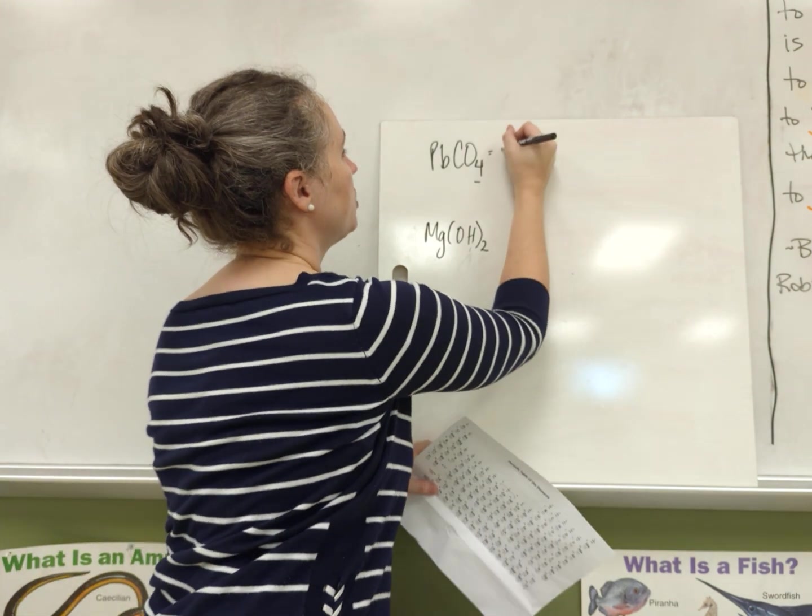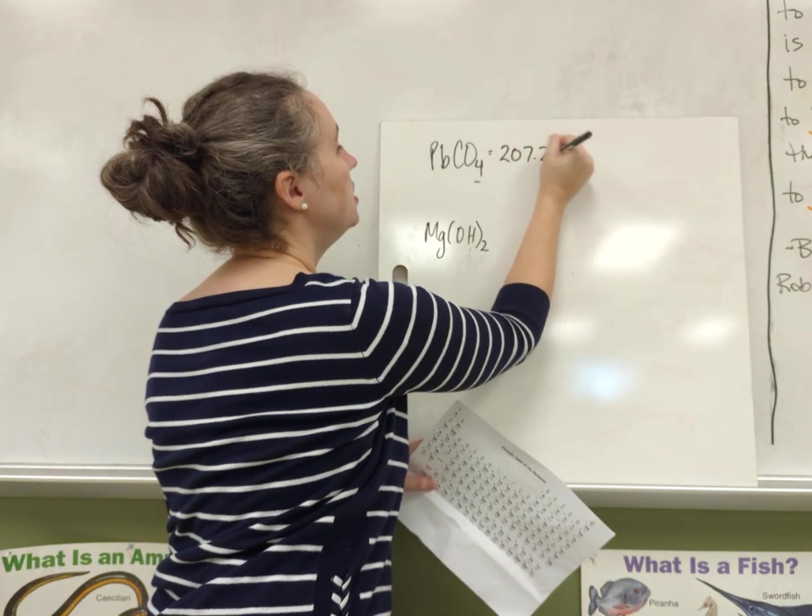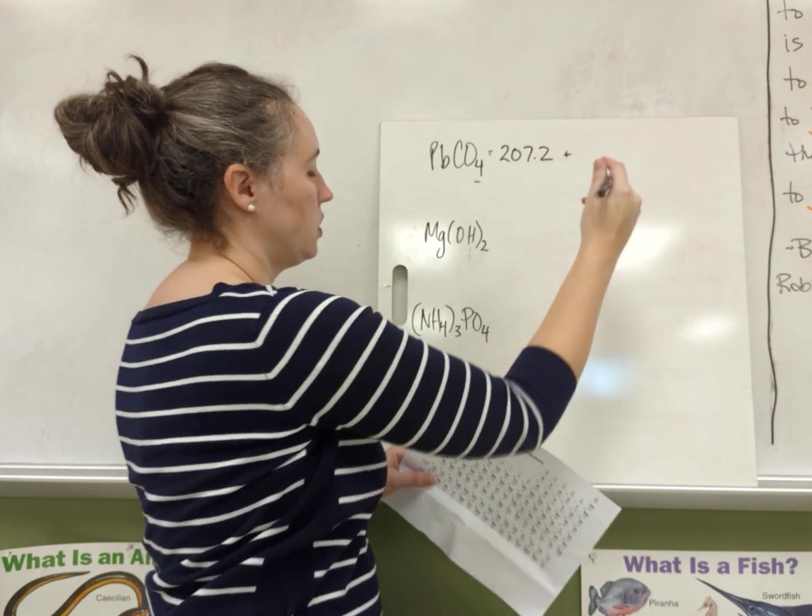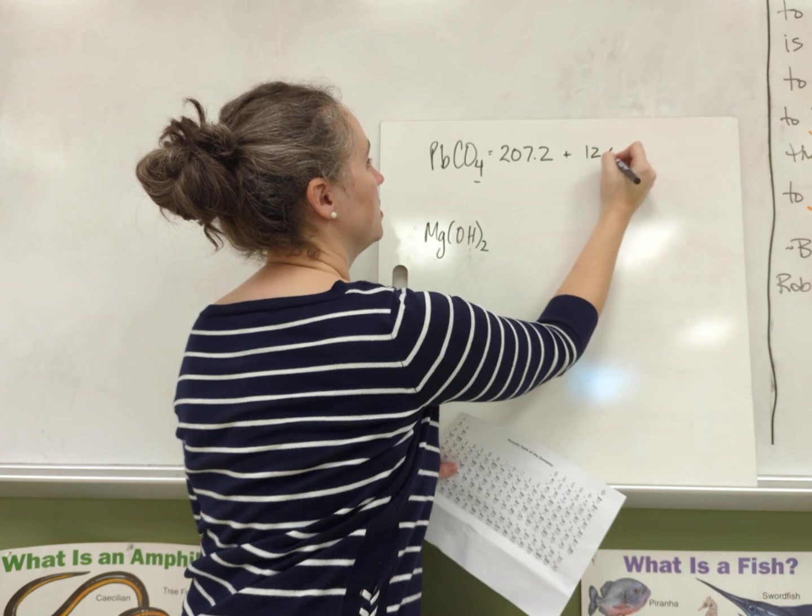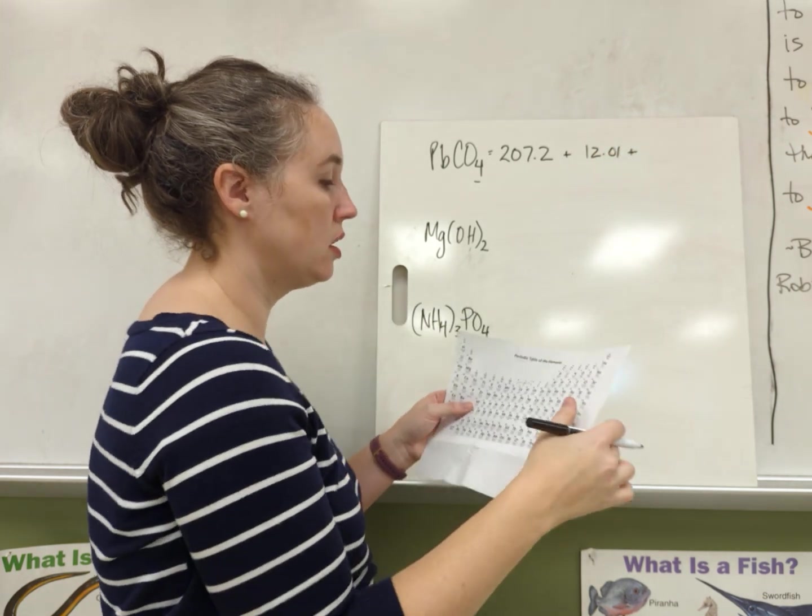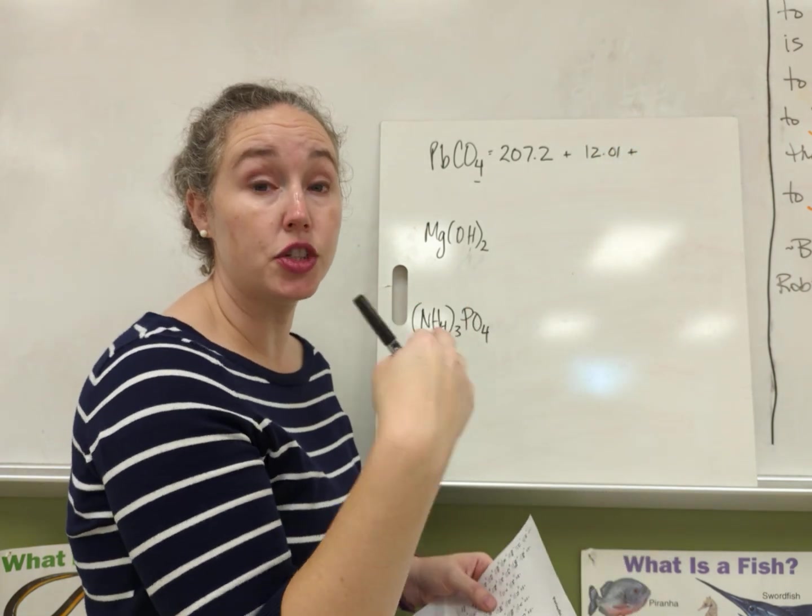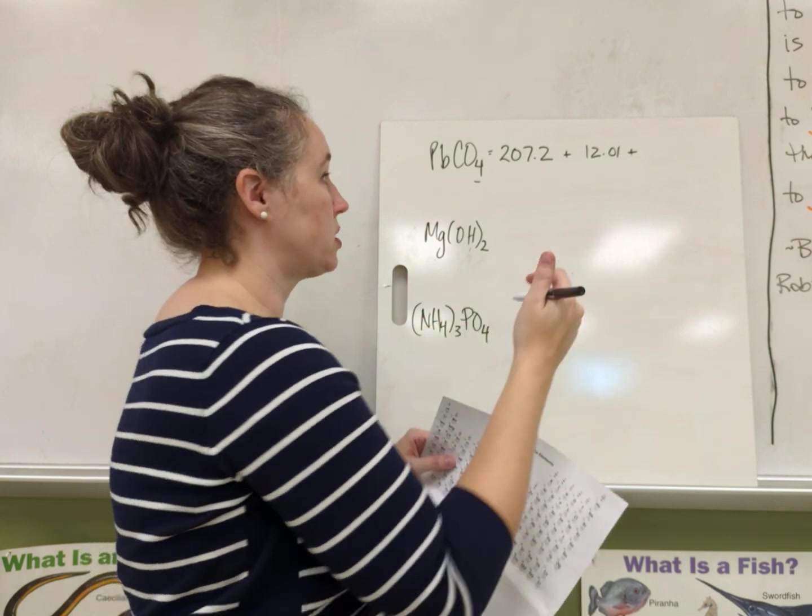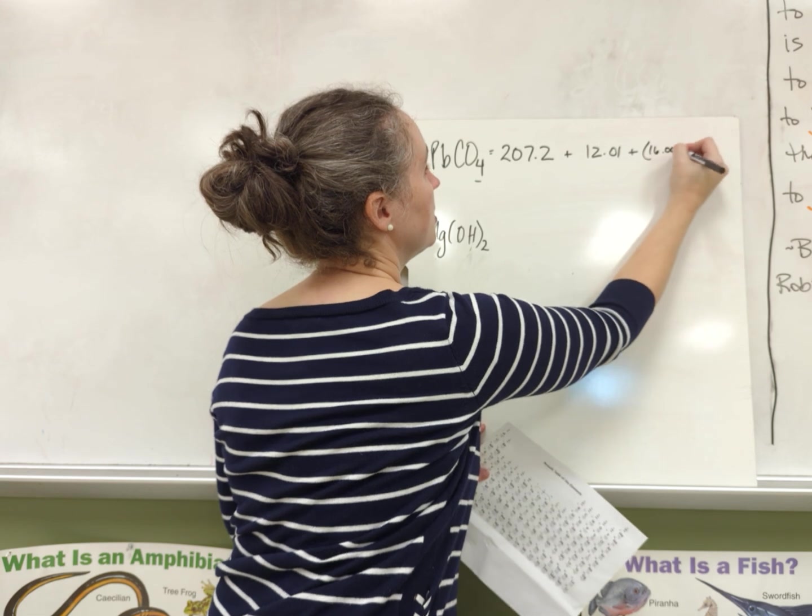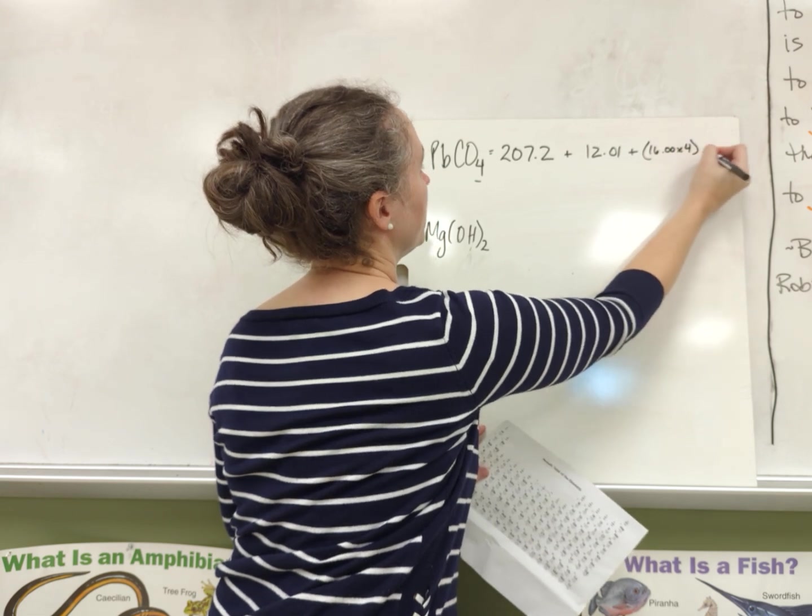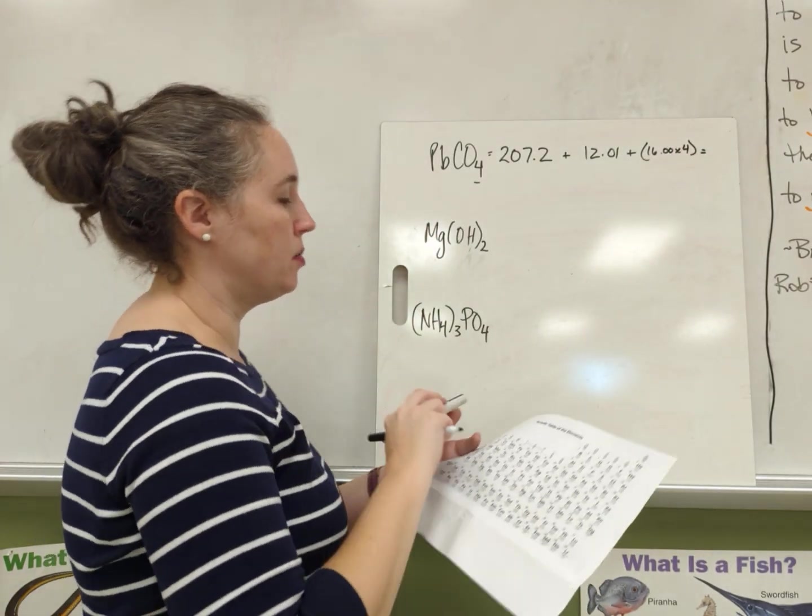So lead is right here, Pb number 82, that's 207.2 for lead, plus carbon is 12.01, plus what we just did, oxygen is 16 times 4 is 64.00. So we'll do 16 times 4.00. And then let's add them all up.